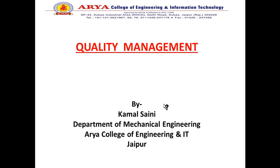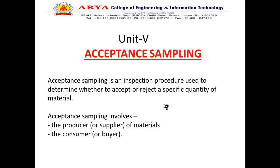Welcome to the class of quality management. We will discuss unit 5: acceptance sampling. Acceptance sampling is an inspection procedure used to determine whether to accept or reject a lot of quantity. It involves the buyers and producers.